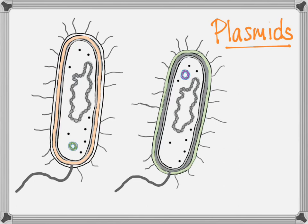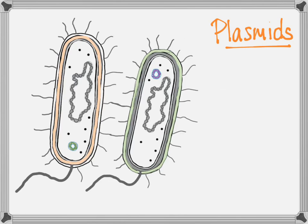Bacteria can connect using those little fuzz-like structures on their outside, and they can trade plasmids — make an extra copy of their plasmid and give it to another bacteria.